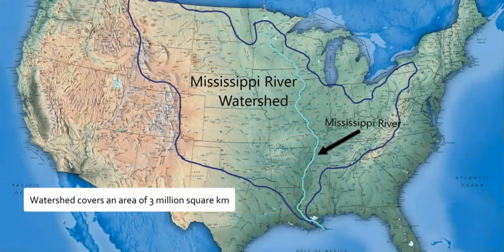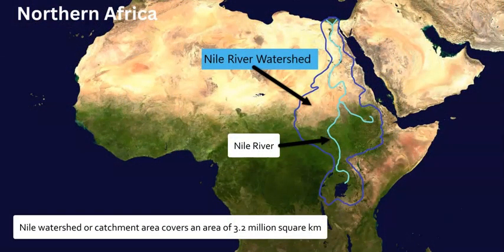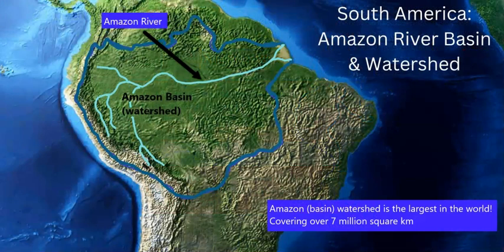Looking at world examples, there are some absolutely massive watersheds covering great areas across the continents. The Mississippi drainage basin is huge, spanning from the Appalachians to the Rockies. You have the Nile River catchment area, which is huge in Africa, plus the Congo and the Yangtze. The largest in the world is the Amazon, which flows through and produces the amazing Amazon rainforest ecosystem. It covers the majority of northern South America and spans up to seven million square kilometers.